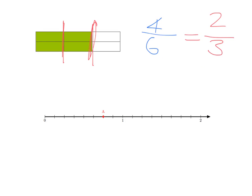Let's do another quick example on our number line. What is A? We've divided our unit into eight pieces, so we're talking about eighths. We've taken six out of eight pieces, so A is at six-eighths. But if we think of it differently and group into four pieces — quarters — then A is three along, so it's at three-quarters. Six-eighths and three-quarters are exactly the same fraction, exactly the same number, just written in a different way. We call these equivalent fractions.